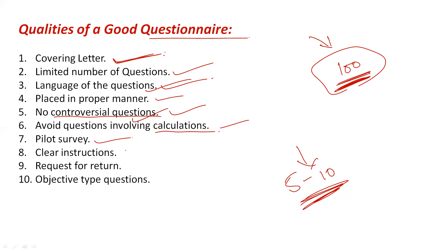The eighth quality is clear instructions — clear instructions should be provided before filling the questionnaire, just as instructions are written on every question paper or task set. The ninth quality is a request for return — since people may not return the questionnaire after filling it, there should be a note requesting them to return it to the researcher or the person who distributed it.